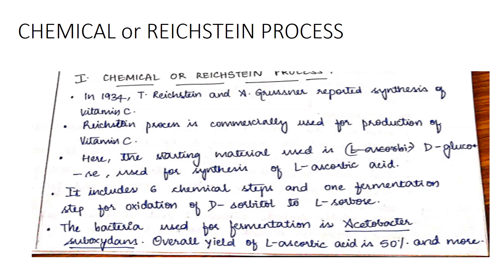It includes six chemical steps - oxidation of sorbitol to sorbose. This chemical production pathway is also called sorbitol pathway. Here for fermentation purpose we are using one bacteria, Acetobacter suboxydans. Overall yield is 50 percent.